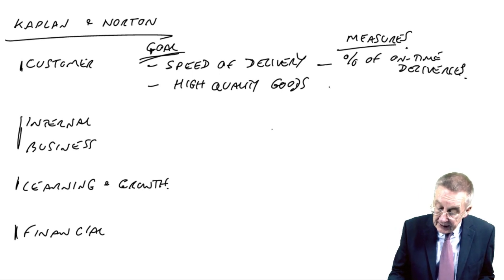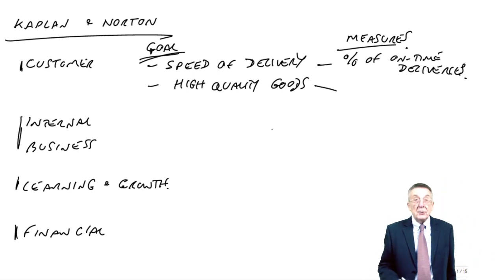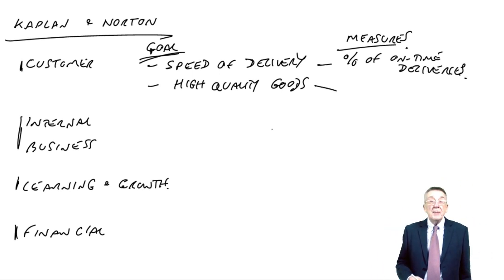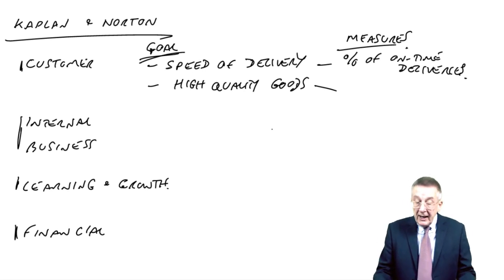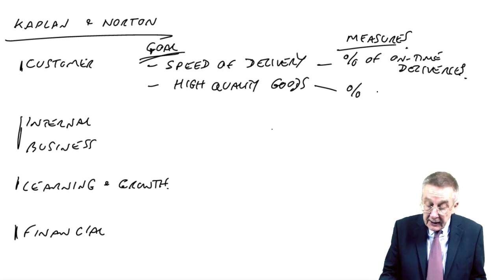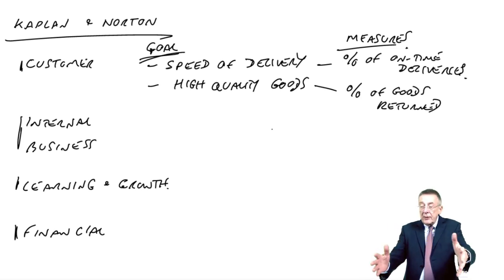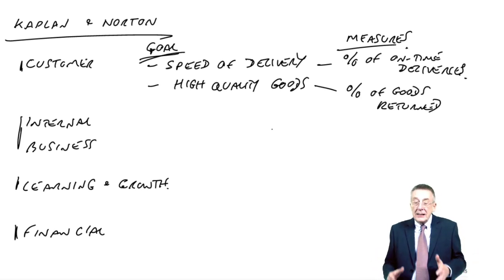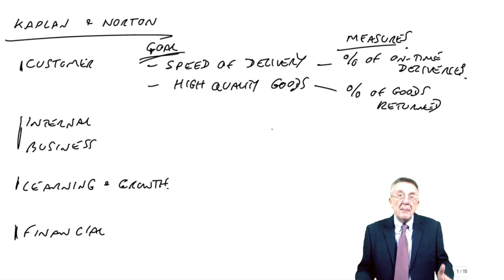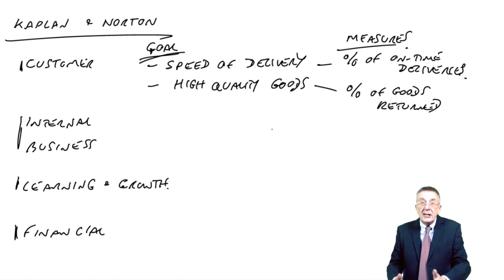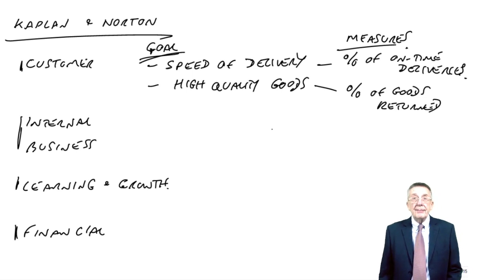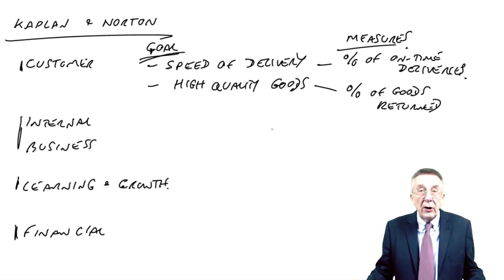How might we measure quality? If we decided that high quality goods were important, how might we measure that? One example is the percentage of goods returned. In the exam, your job is to look at the information given and decide what sort of measures might be relevant. Using percentages is sensible — if you sell twice as many goods this year, you're not going to be surprised if there are more returns in absolute terms.